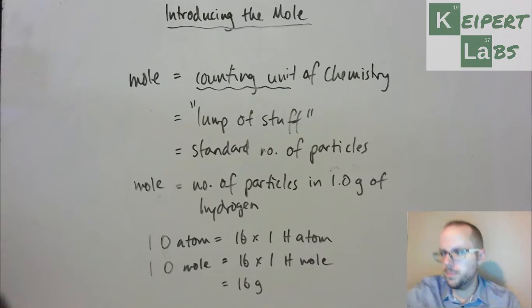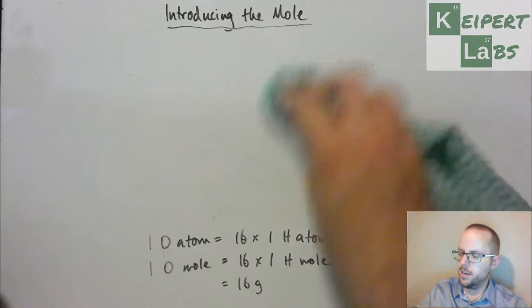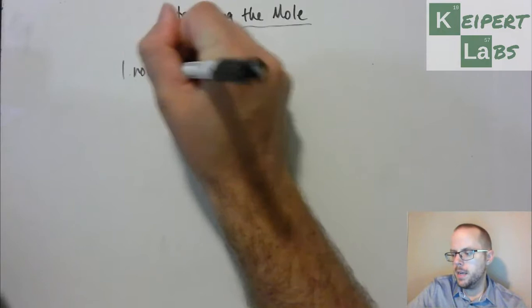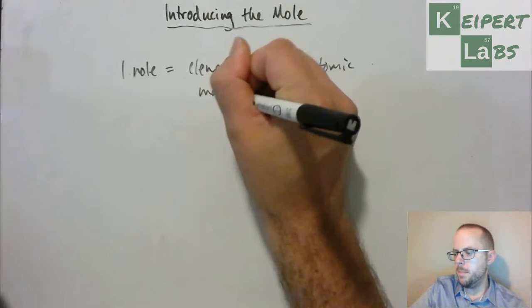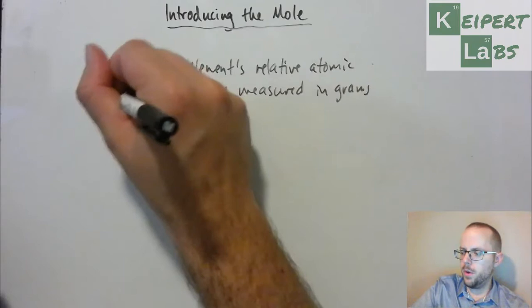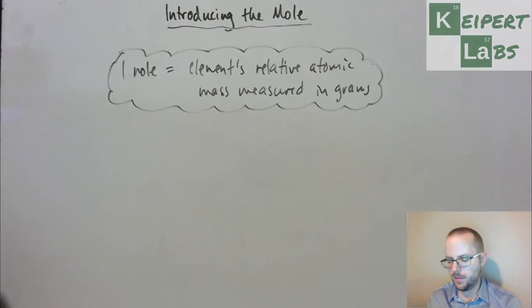So that means that if 1 gram of hydrogen represents 1 mole, then 16 grams of oxygen represents a mole of oxygen. And so all of a sudden, what we do, we actually now have, in a way that with an elegance that we might struggle to appreciate at this point, is that the 1 mole represents the elements, or is represented by the element's relative atomic mass, measured in grams.